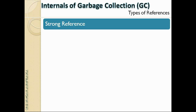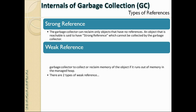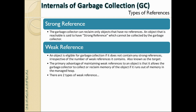Regarding types of references: the garbage collector can reclaim only objects that have no references. An object that is reachable is said to have a strong reference — in the object reference graph, the blue objects are strong references and cannot be reclaimed. Weak references are objects not reachable from the root set; they are eligible for garbage collection and are termed targets for reclaiming memory.